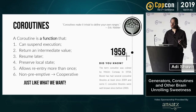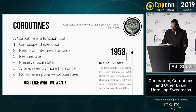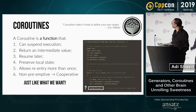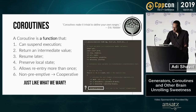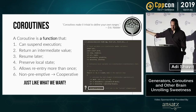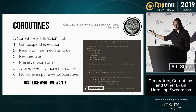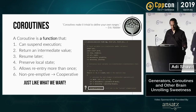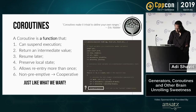If we think about it, returning an intermediate result in mid-computation sounds just like what we wanted. If process_line was a coroutine, instead of calling do_something at the bottom in the loop body, we could suspend execution at that point and just yield the current value of ptr. Later, the user can do whatever they want with this value and resume the computation from where we left off once they're ready.